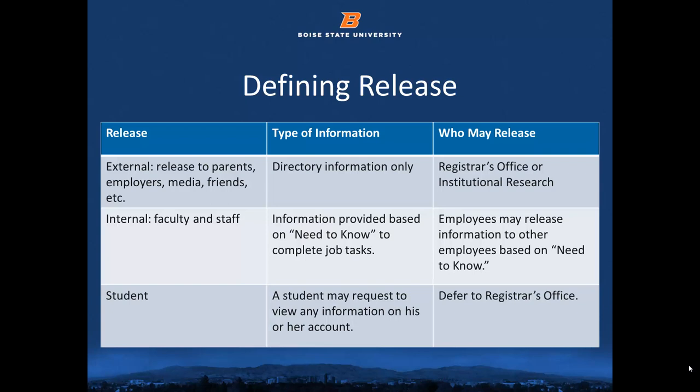Employees may release information to other employees based on a concept called need to know, or legitimate educational interest. Release is based on what the person needs to know about the student information to complete job tasks or meet job responsibilities. A good litmus test is: does this person need this information to support a student or meet job requirements? To release information to a student, you must be able to reasonably and confidently identify the student. When releasing information via email, you should only release information to the student's assigned Boise State email address, identified by the u.boisestate.edu domain.